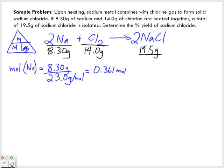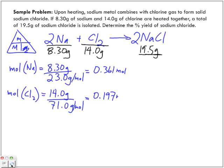We want to do the same thing. We want to find the number of moles now of chlorine. So, we take the mass, 14.0 grams, and we divide it by 71.0 grams per mole to give us 0.197 moles. Now, if we're going to stop there for a quick second, we're going to look over now at our product. 19.5 grams. Is that an actual or a theoretical?